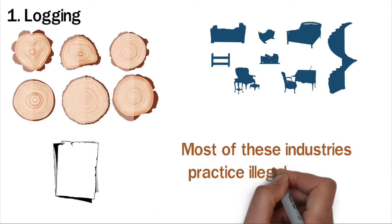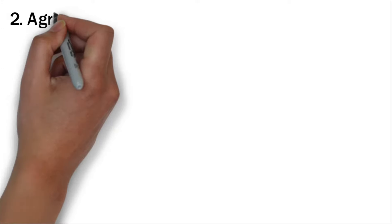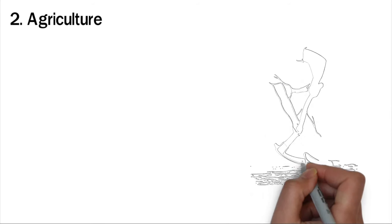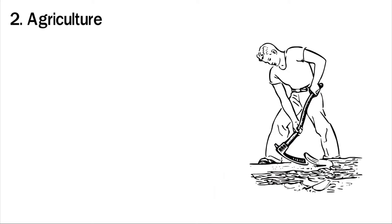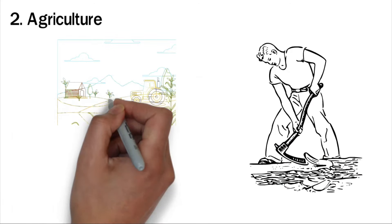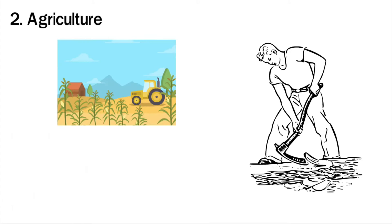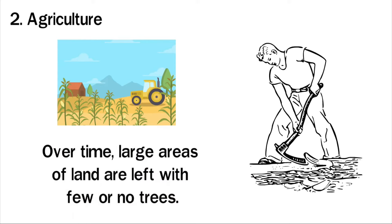Most of these industries practice illegal logging, thereby destroying forest cover. Two: Agriculture. Up to 80 percent of deforestation around the tropics is caused by agricultural activities. As the human population continues to grow, the demand for food increases. People have to cut down trees to create space for crops. Trees that are cut for this purpose are rarely replaced, leading to the loss of more forest cover over time. Large areas of land are left with few or no trees.